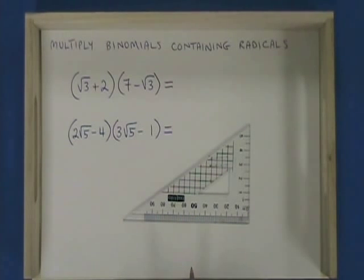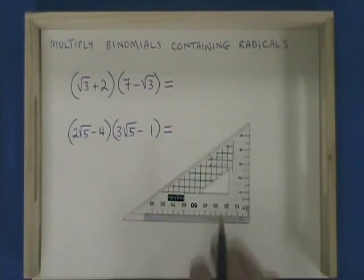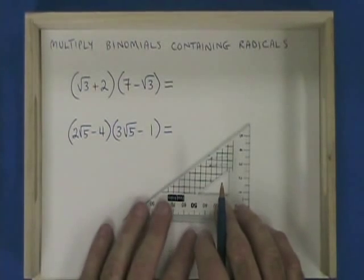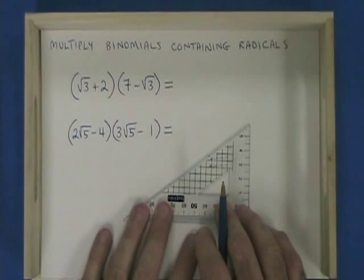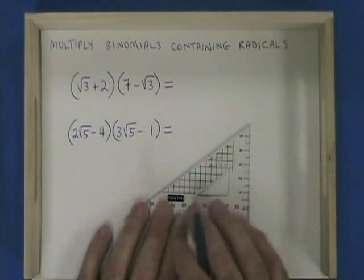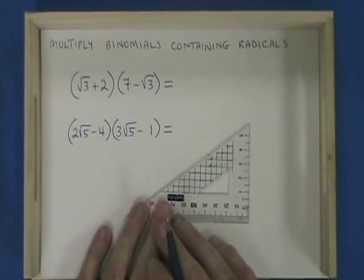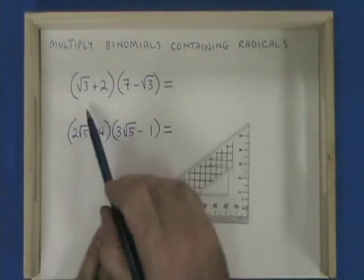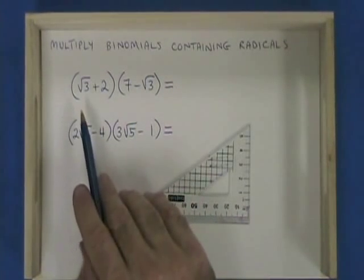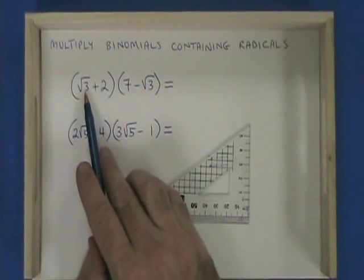This video will illustrate how to multiply binomials that contain radicals. We are doing the FOIL method, the same thing that we do when we work with polynomials, and it works just as well when you have radicals.